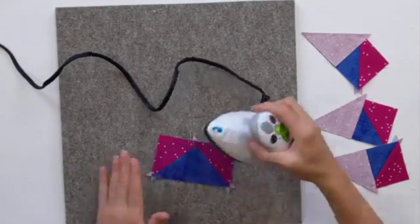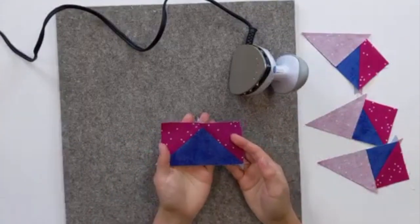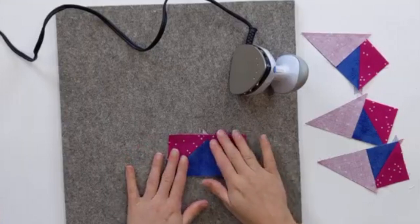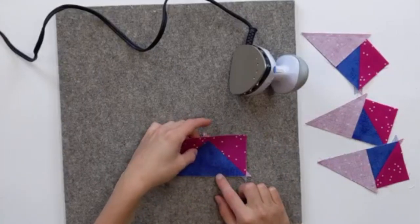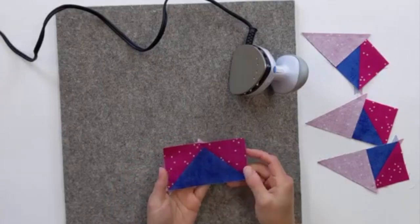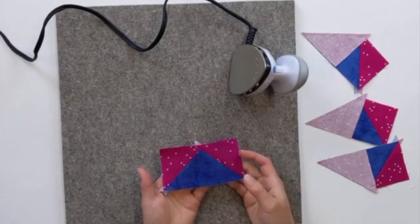And there we are. A beautiful flying geese unit. I'm going to press the rest of these. I'll have four of them. Don't worry about these little tails going on. These will get trimmed off when we trim our flying geese. I have a video to help you trim your flying geese perfectly. So, make sure you check that out as well. Thanks for watching.